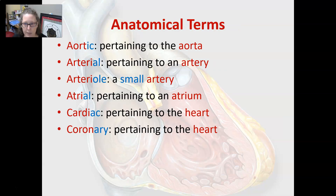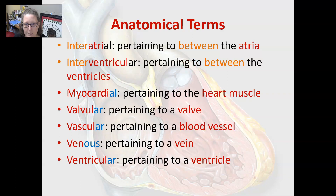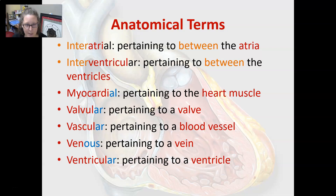Aortic is pertaining to the aorta, arterial is pertaining to an artery, arteriole is a small artery, and atrial is pertaining to an atrium. Cardiac pertains to the heart, but coronary also pertains to the heart. Interatrial means pertaining to between the atria, and interventricular means pertaining to between the ventricles — such as the interatrial septum and the interventricular septum, which are the walls separating the atria and ventricles.